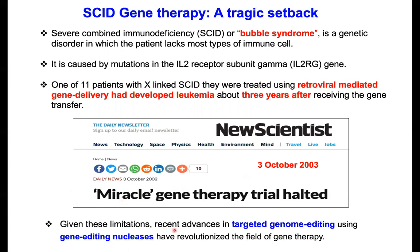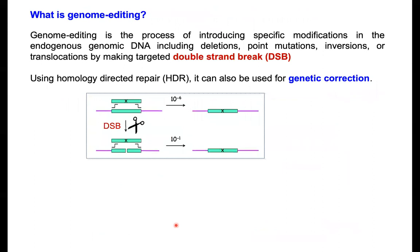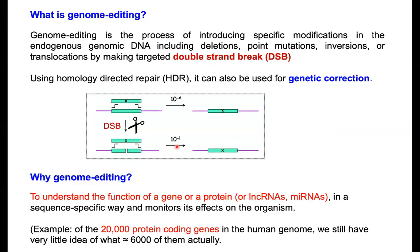Given these limitations, recent advancements in genome editing using gene-editing nucleases have revolutionized the field of gene therapy. Genome editing is the process of introducing specific mutations in the endogenous gene — including deletions, base pair substitutions, or translocations — by making a targeted double-strand break. In normal circumstances, homologous recombination happens one in one million cells. But if you make a double-strand break using genome editing, you can increase the homologous recombination efficiency by several thousand-fold. That is where genome editing plays a major role in gene and cell therapy.